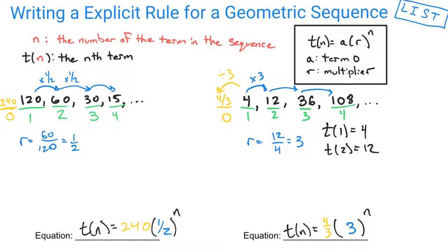And so that would be how you write an explicit rule for a list of your terms, making sure that you realize that the very first term that you see, which is given to you, is term 1. We have been writing our rules starting at term 0. So you have to work backwards to get there using that multiplier.